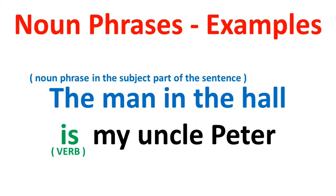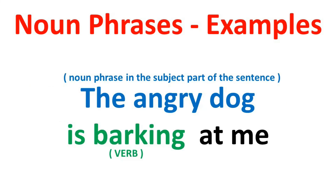Now let's look at some examples. In blue, in the subject part of the sentence, you will see your noun phrase. The man in the hall is my Uncle Peter — the verb is shown in green, and 'the man in the hall' is the noun phrase because it tells you where this man is. Another example: The angry dog is barking at me — 'is barking' is your present progressive verb, and 'the angry dog' is your noun phrase because it tells you more information about the dog.